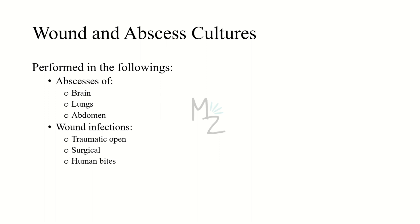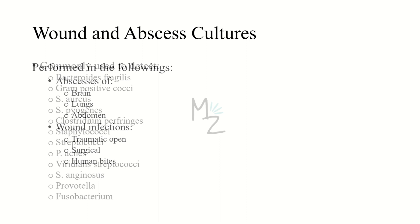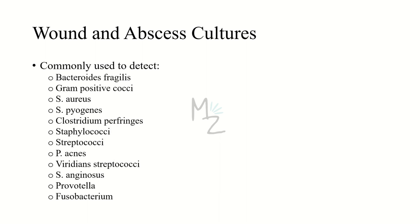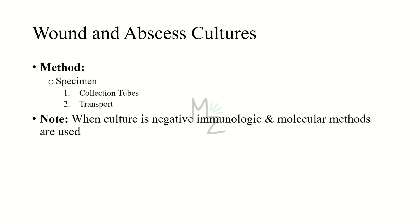Wound and abscess cultures are performed for brain abscesses, lung abscesses, abdominal abscesses, traumatic open wound infections, surgical wound infections, and human bites. Organisms commonly detected include Bacteroides fragilis, gram-positive cocci such as S. aureus and S. pyogenes, Clostridium perfringens, Staphylococci, Streptococci, Propionibacterium acnes, viridans streptococci, Streptococcus anginosus, Prevotella, and Fusobacterium. The method is to collect a specimen in collection tubes, transport it, and streak it over the culture plate.